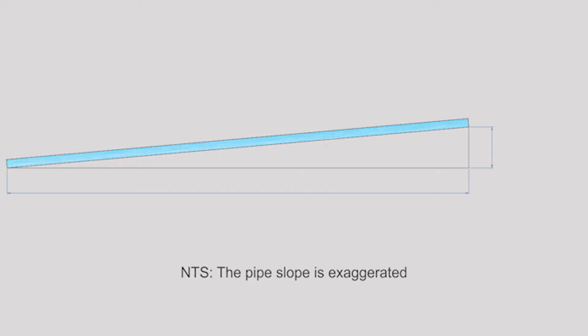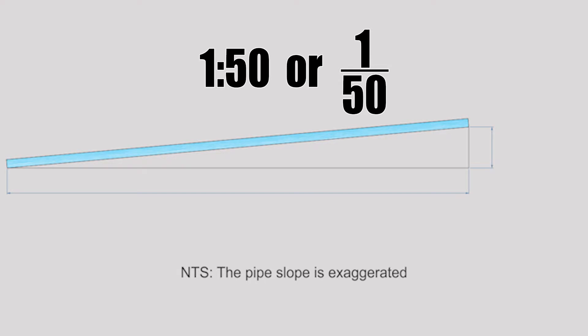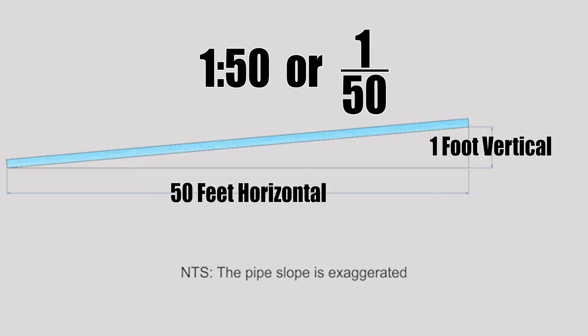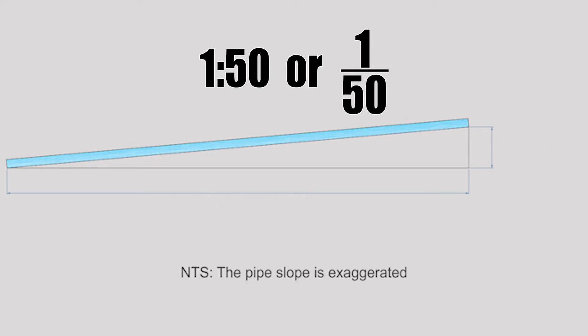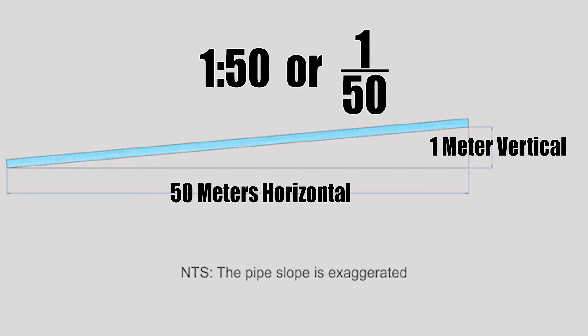To describe ratio grade, let's use an example with a piece of pipe graded at 1 in 50. With this type of grade there are no units of measurement attached — it is just a ratio. In terms of feet, every 50 feet the pipe runs horizontally it will either drop or rise one foot vertically. In terms of meters, every 50 meters it will either drop or rise one meter vertically.